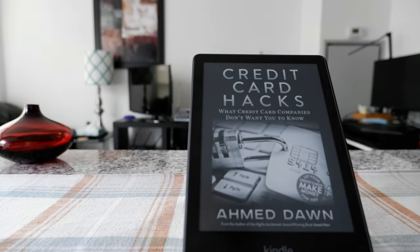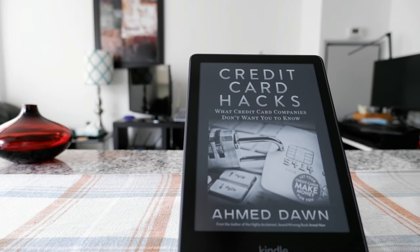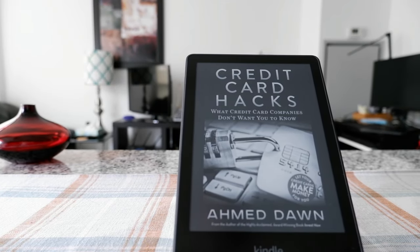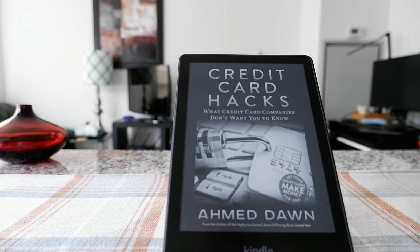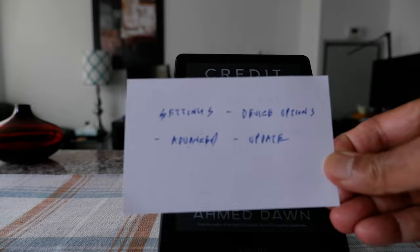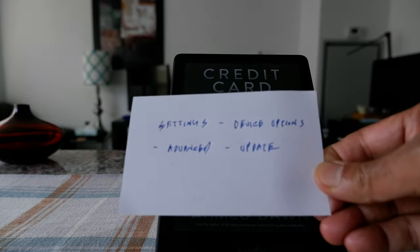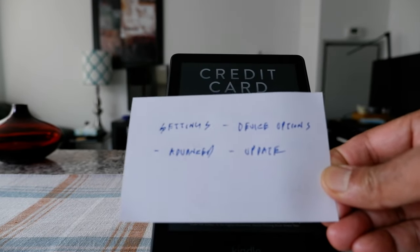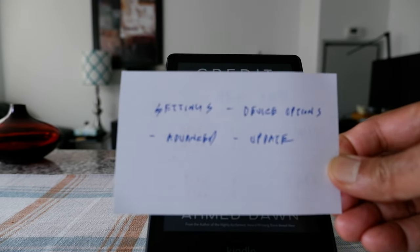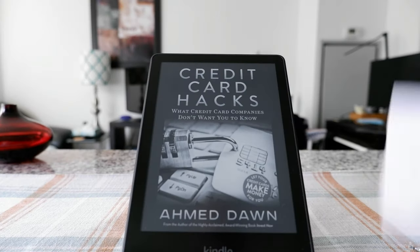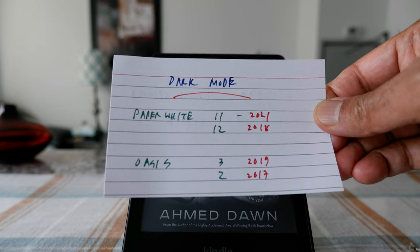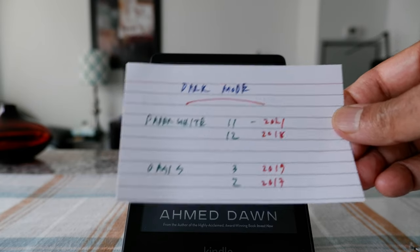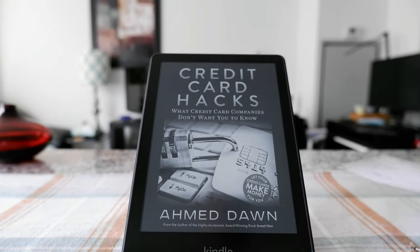You also have to have updated software to support dark mode. In order to update your Kindle device, if you haven't done so for a while, all you have to do is go to Settings, then Device Options, then Advanced, and then Update. That should give you the latest software. If you have one of these supported Kindles and updated software, you should be able to use dark mode, which I'm going to show you right now.